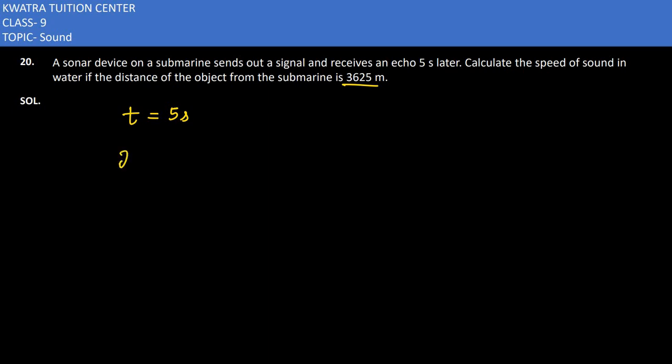So how much distance travel will be in our 2D? That means 2 into 3625. So if we multiply, what value we will get, 7250 meter. So this is the distance.